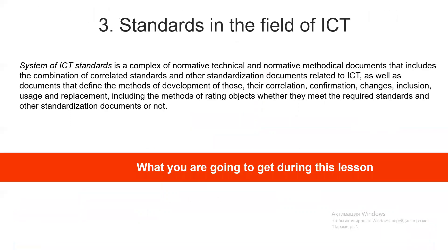The last topic is about standards in the field of ICT. The system of ICT standards is a complex of normative, technical and normative methodical documents that includes the combination of correlated standards and other standardization documents related to ICT, as well as documents that define the methods of development of those, their correlation, confirmation, change, inclusion, usage and replacement, including the methods of rating objects — whether they meet the required standards and other standardization documents or not.